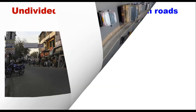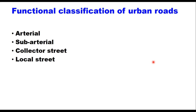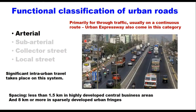Functional classification of urban roads is based on the hierarchy of urban roads and the total urban road network. Besides urban freeways and expressways, urban roads are classified into four categories: arterial, sub-arterial, collector street, and local street. Arterials form the principal network for through traffic flow, usually on a continuous route. Significant intra-urban travel, such as between the central business district and outlying residential areas or between major suburban centers, takes place on this system.